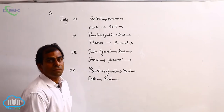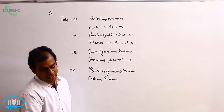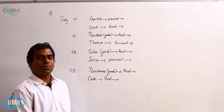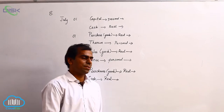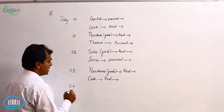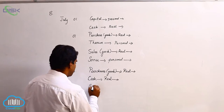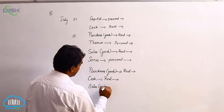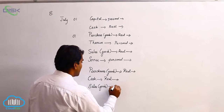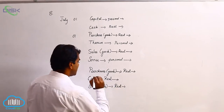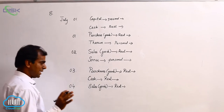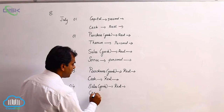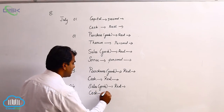On the fourth date: sold goods to Tony for cash. Sales means goods, which is a real account. Check whether goods are going out or coming in when you sell, and apply the rule. It is stated we sold for cash, and cash is again a real account — think whether cash is coming in or going out and apply the rule.